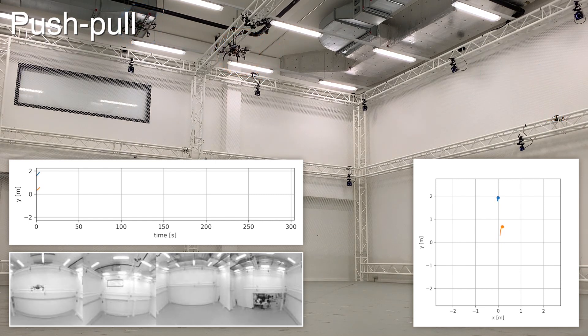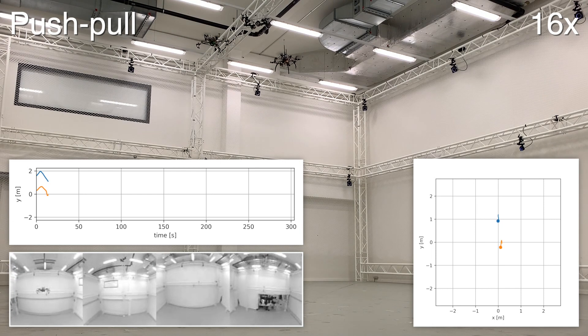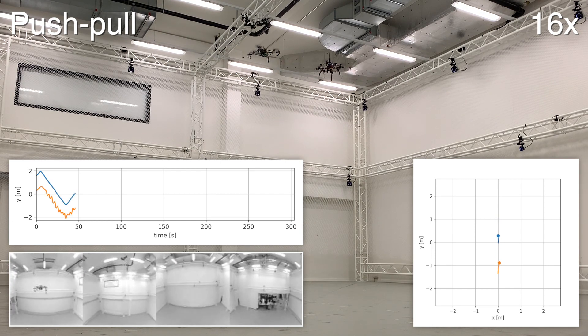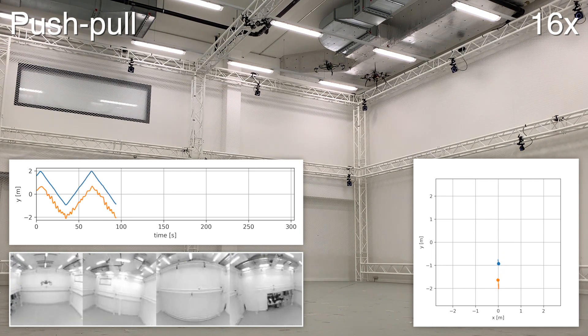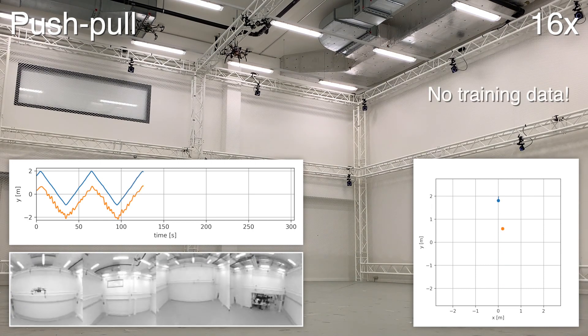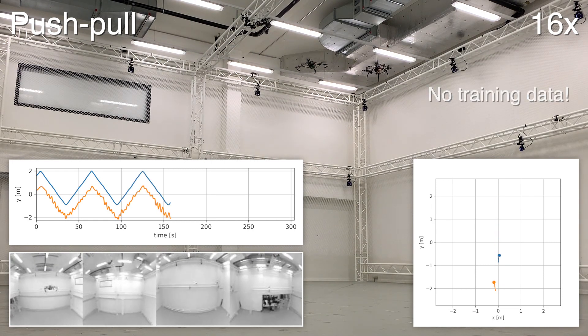As our final experiment, the push-pull scenario shows that the neural controller can provide interagent collision avoidance by imitating the separation rule. Again, no specific training data was provided for this scenario.